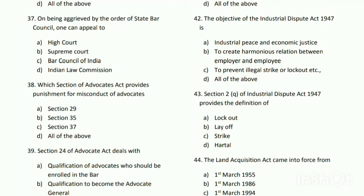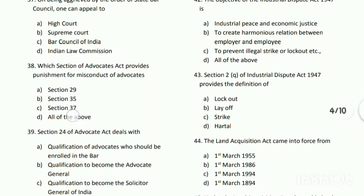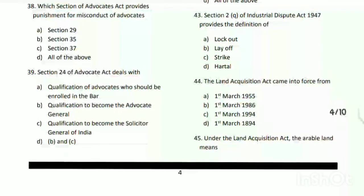The answer is D - all of the above: A - industrial peace and economic justice; B - to create harmonious relations between employer and employee; and C - to prevent illegal strikes or lockouts. Question number forty-three: Section 2(q) of the Industrial Disputes Act 1947 provides the definition of what?